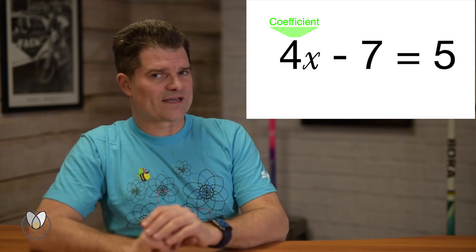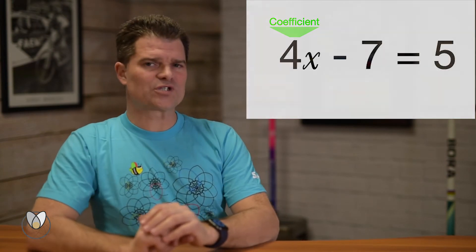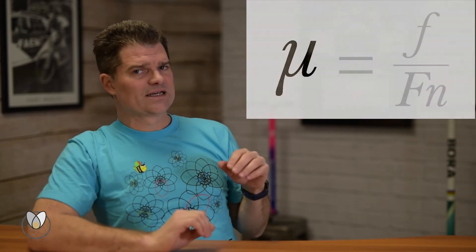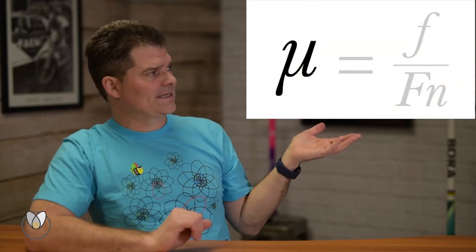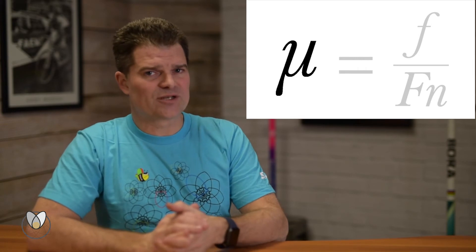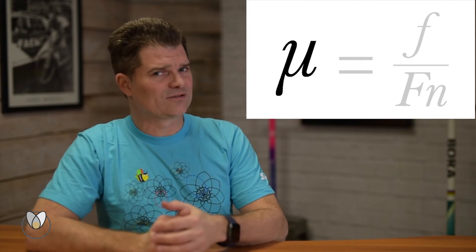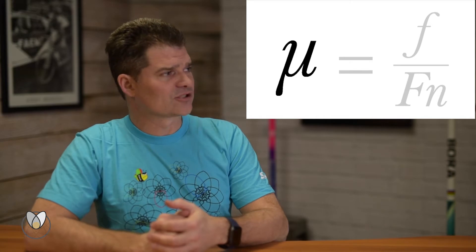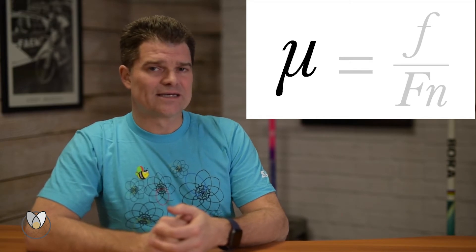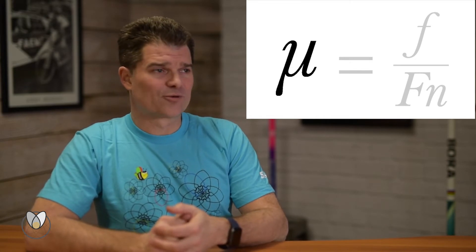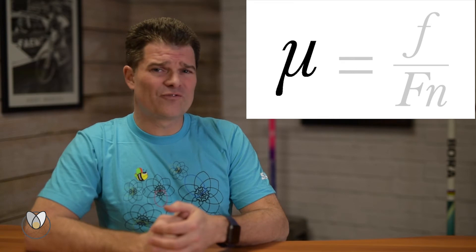Let's start with probably the most common coefficient that we talk about, and that is the coefficient of friction. The coefficient of friction, shown here, is used by engineers typically as mu — it looks like a funky little lowercase u, a little cursive guy. It's actually the Greek letter mu. So, what is the coefficient of friction?